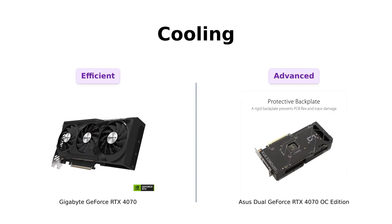When it comes to cooling, both graphics cards have their unique features. The Gigabyte GeForce RTX 4070 comes with the Windforce cooling system, which ensures efficient heat dissipation. It also includes RGB Fusion for customizable lighting, a dual BIOS for added flexibility, a protection metal backplate, and an anti-sag bracket to prevent any bending or sagging.